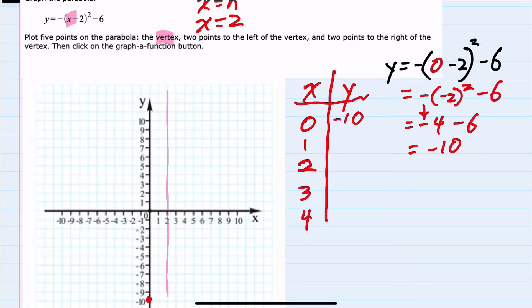We will now repeat the process for x equals one. Replacing x with one we have the negative on the outside. One minus two is negative one squared. Bring down the minus six. Again the negative one squared is a positive one.